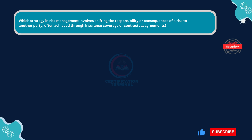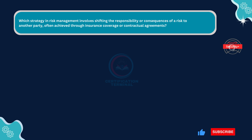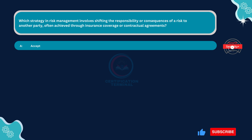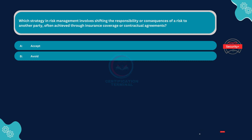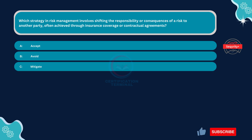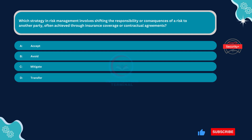Which strategy in risk management involves shifting the responsibility or consequences of a risk to another party, often achieved through insurance coverage or contractual agreements? Option A: Accept. Option B: Avoid. Option C: Mitigate. Option D: Transfer.